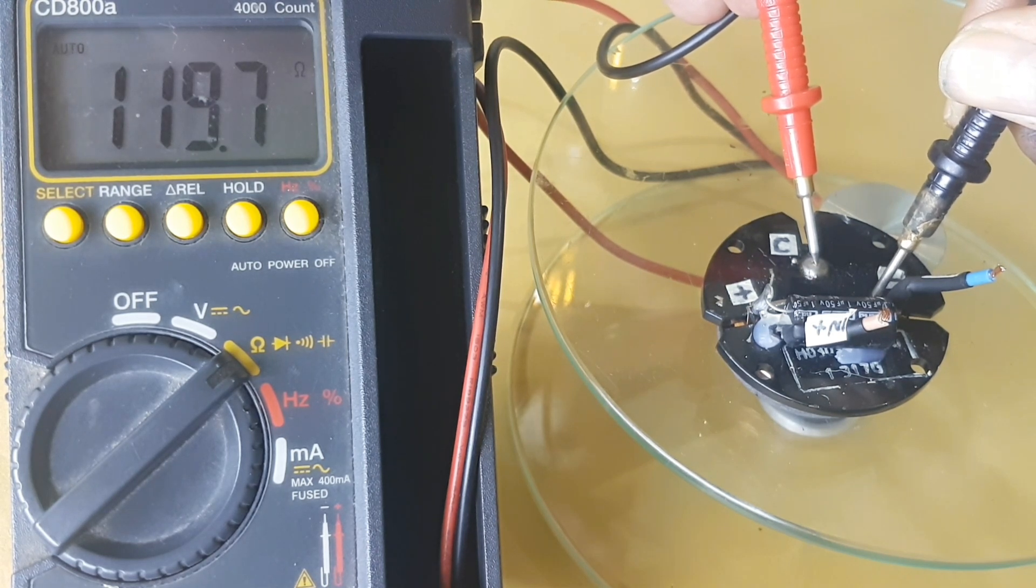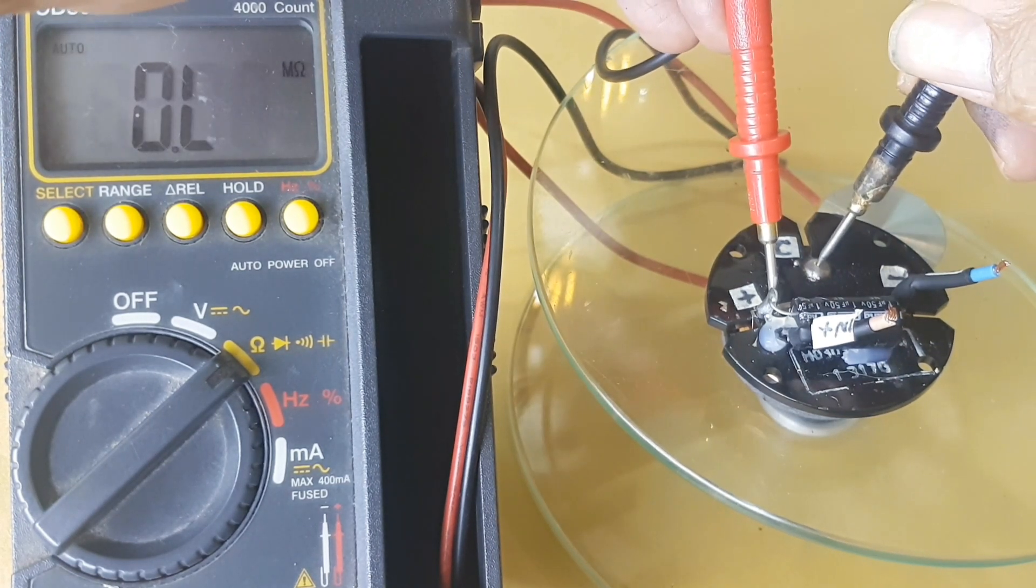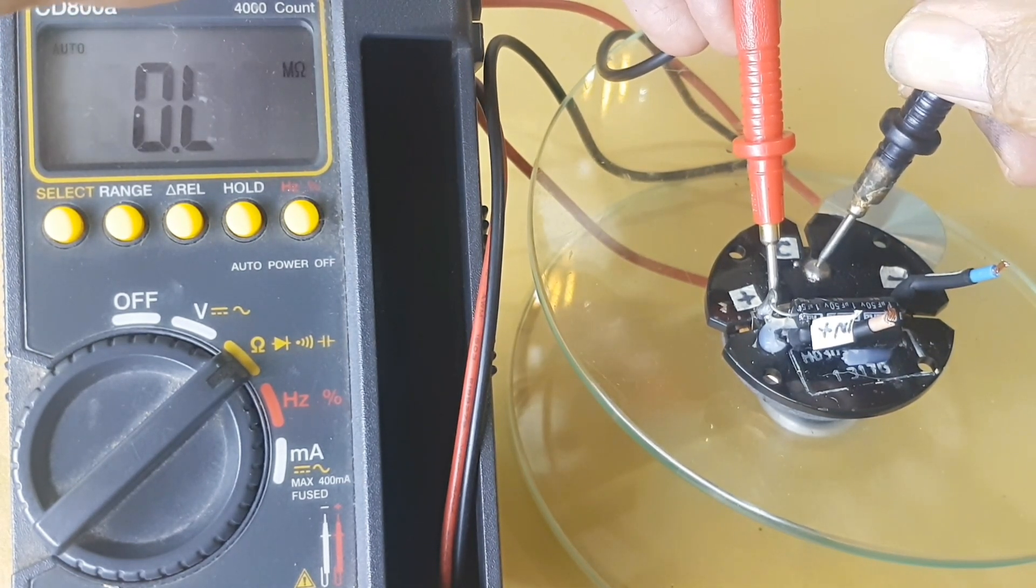Next we measure the resistance value between positive and C, and we get a resistance value of 126.4 ohms.